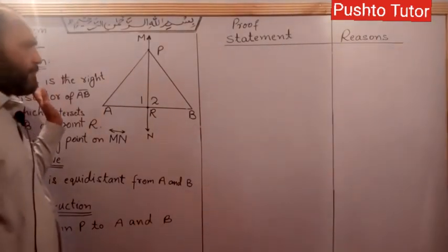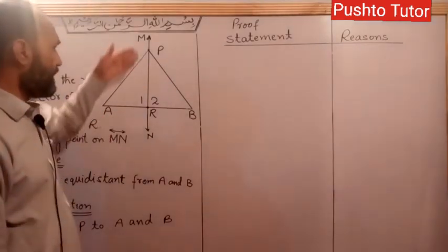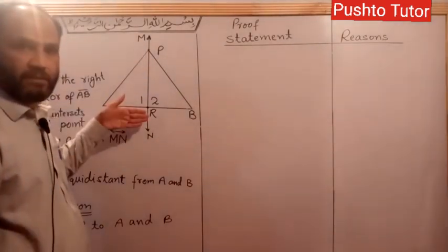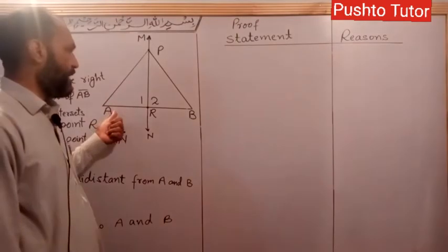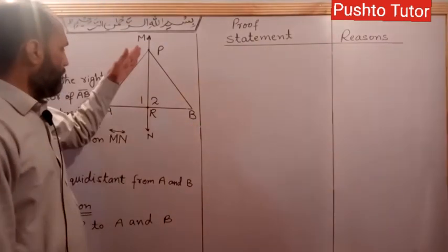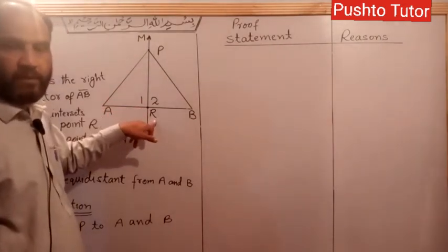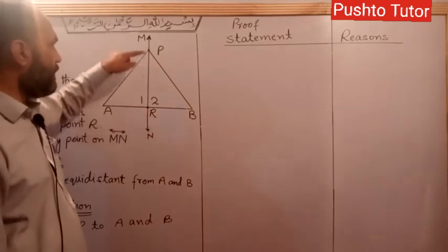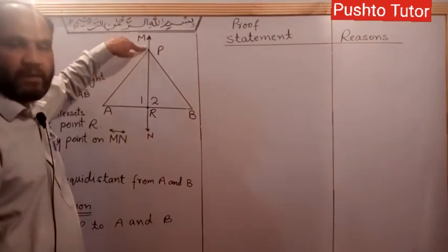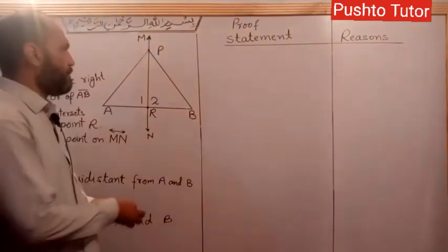Given: MN is the right bisector of line segment AB. MN intersects AB at point R. P is any point on the right bisector MN.